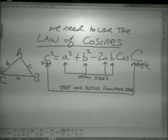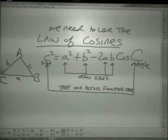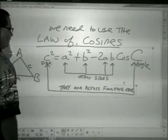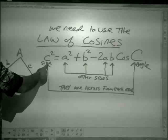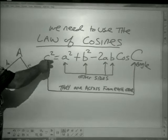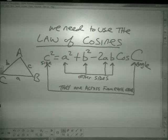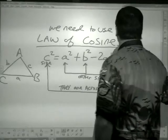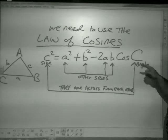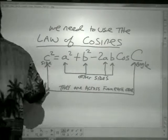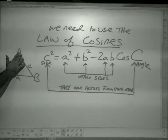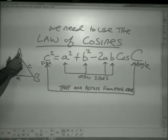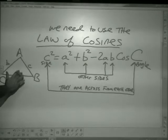The law of cosines looks a lot like the Pythagorean theorem. It has c squared equals a squared plus b squared — sounds like Pythagorean theorem — but minus 2ab cosine of capital C, which means angle C. In any triangle, the capital letters are the vertices, the lowercase letters are the sides, and the lowercase letter that corresponds to a capital letter is always across from it.